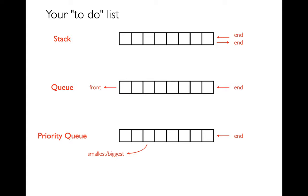DFS as we learned it was recursive — it had stack frames. Whenever you make a recursive call you add a frame to the call stack; when you return you pop it off. So using an explicit stack of tasks is really doing the same thing — instead of a stack of frames, we have a stack of tasks. There's a direct analogy there.